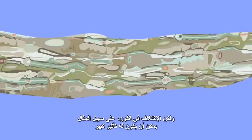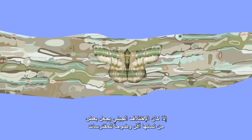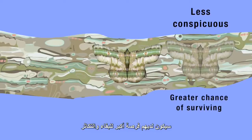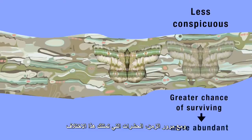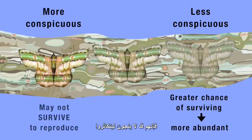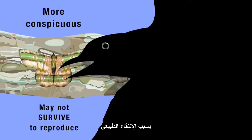A variation in colour, for example, could have a major impact. Take this insect: if genetic variation makes some of its offspring less conspicuous to predators, they'll have a greater chance of surviving and reproducing, and in the course of time the insects with this variation may become more abundant within the population. If the variation makes other offspring more conspicuous to predators, they may not survive to reproduce, and the variation may vanish or become suppressed because of natural selection.